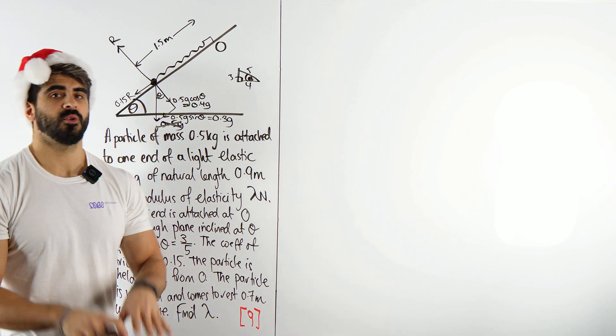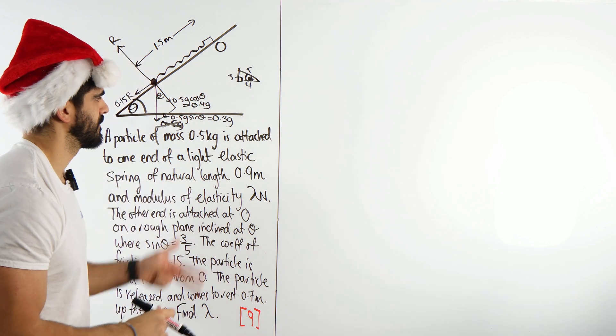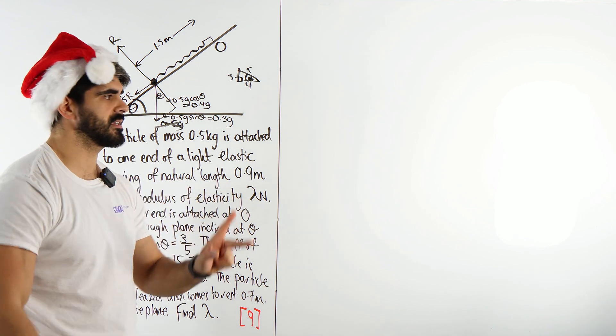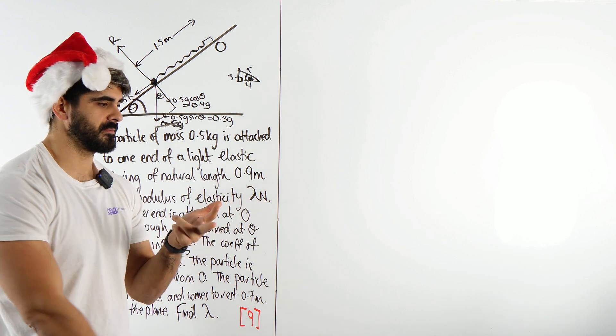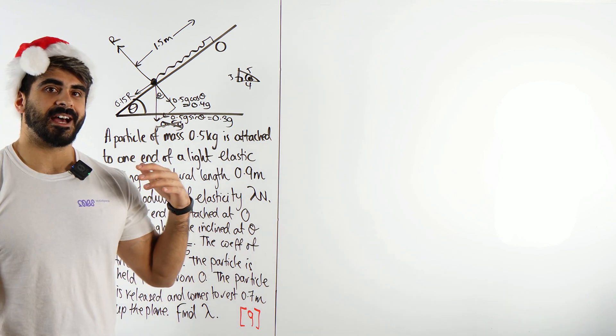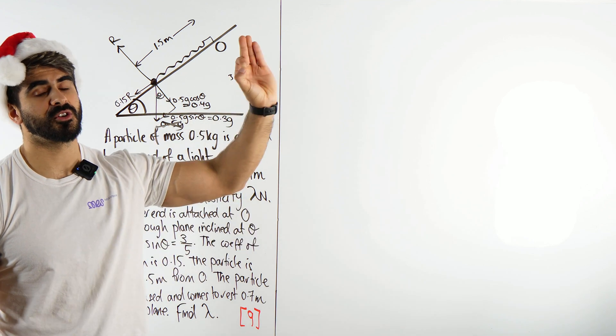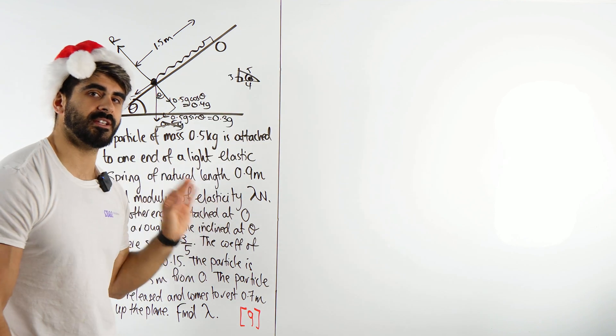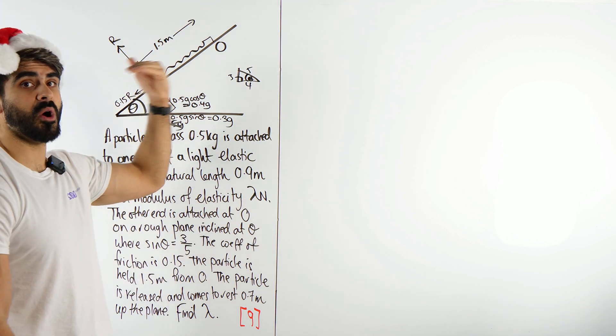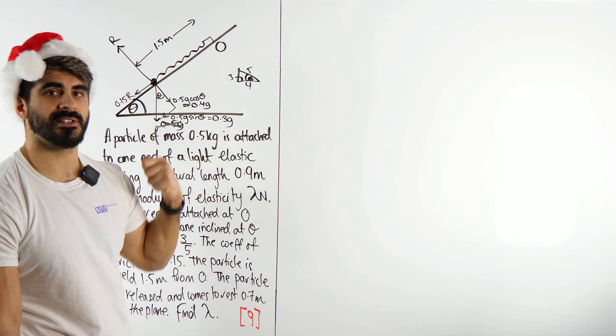So how do we deal with energy questions like this? There's three types of energy we study at further maths. That is elastic potential energy, potential energy so falling vertically, and kinetic energy. We need to look at the beginning and the end. What is the total energy at the beginning and what is the total energy at the end, and what is the work done against resistance? When this particle moves up the plane, it's going to be working against the friction. That resistance is taking energy out of the system.